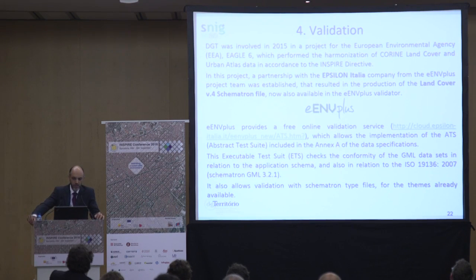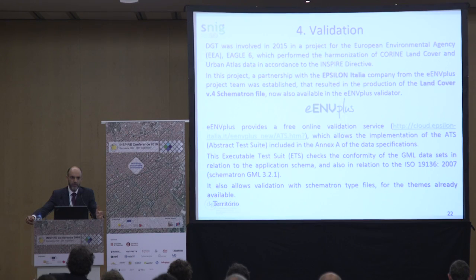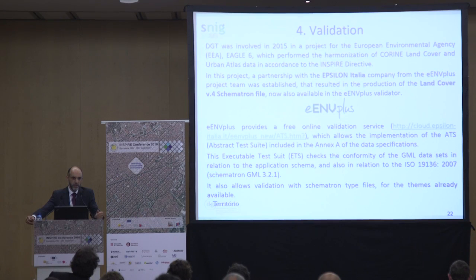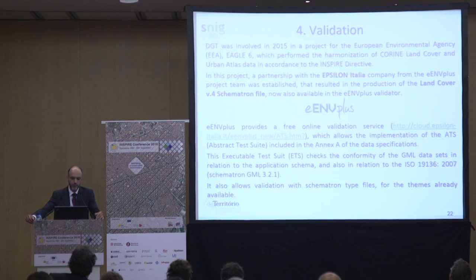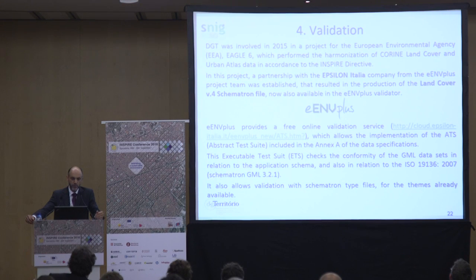For the validation process we also used other tools. DGT participated in the EGLE project, which was related to harmonization of the Corine land cover map according to INSPIRE. In that project, a land cover Schematron file was created, used by the EANF+ online tool — a free online validator that allows validation of GML files according to data specifications. Several Schematron files are available, including the land cover Schematron.